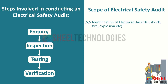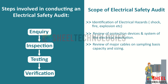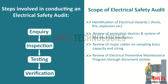The audit process includes identification of electrical hazards, review of protection devices and systems of the electrical installation, review of major cables on a sampling basis for capacity and sizing, and review of the electrical preventive maintenance program through document review.